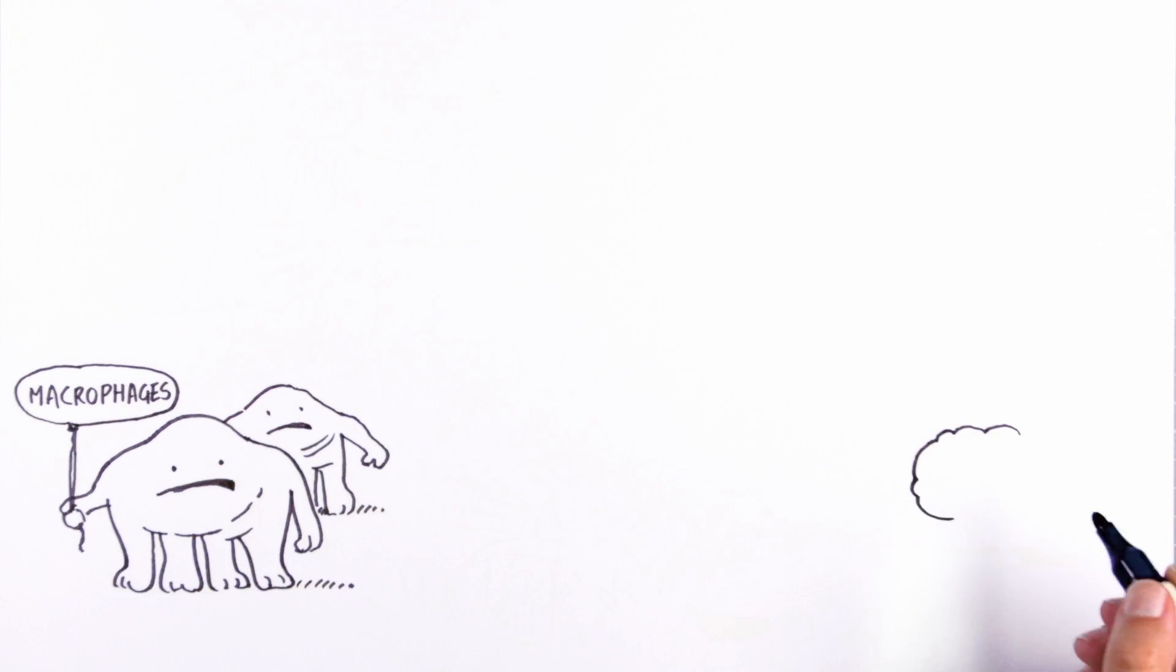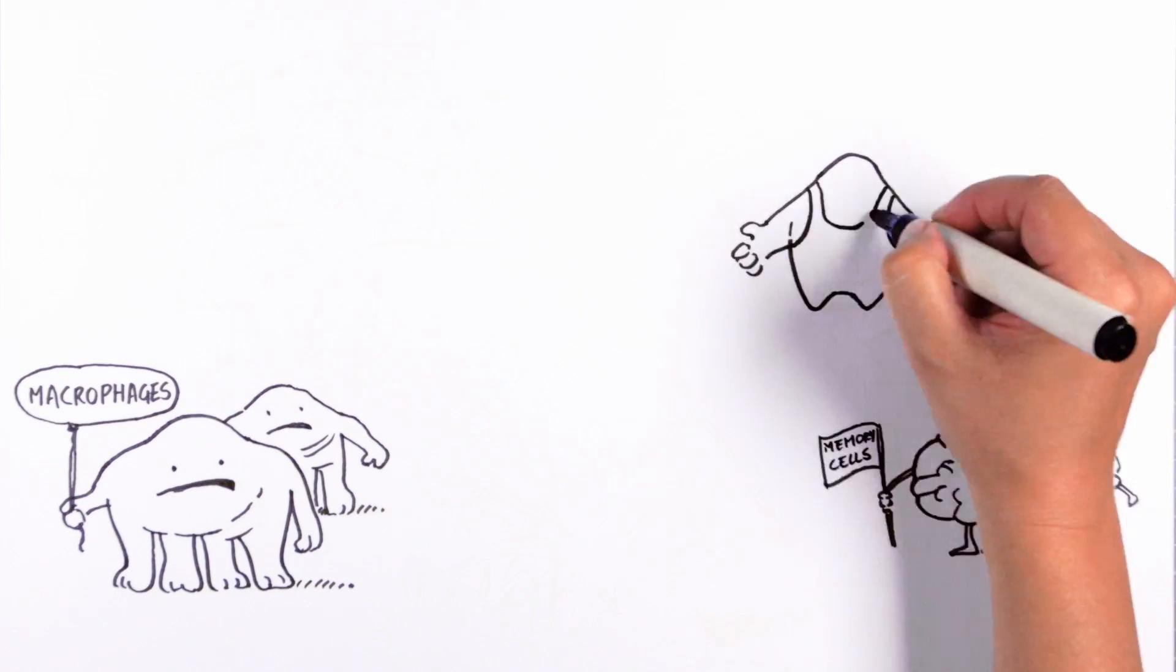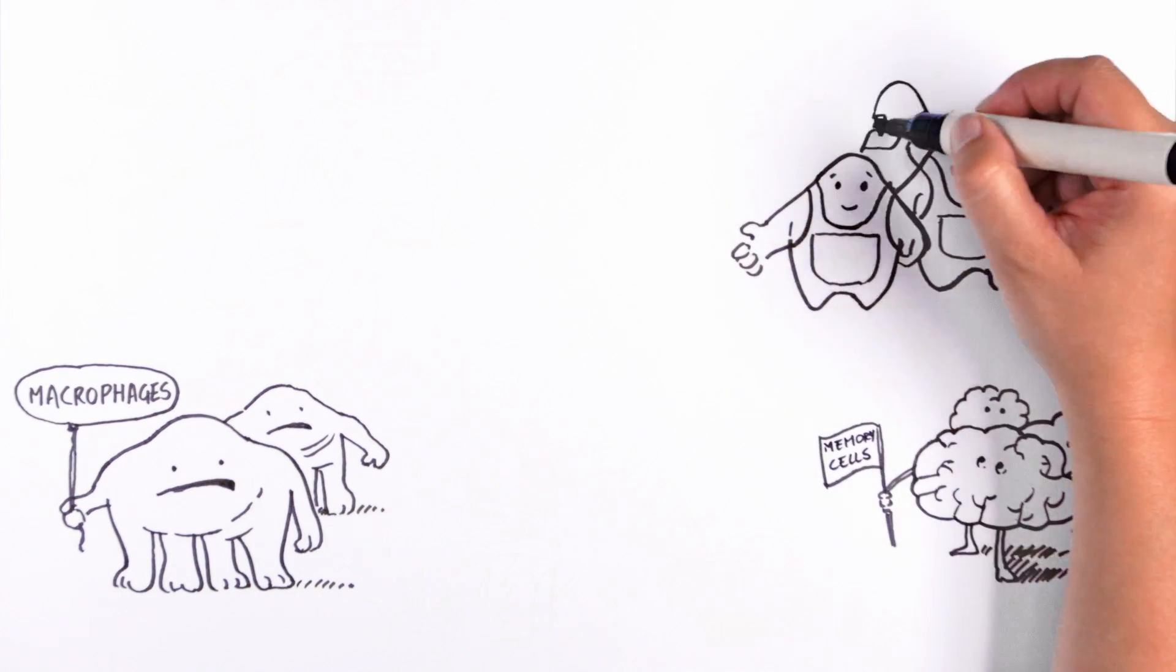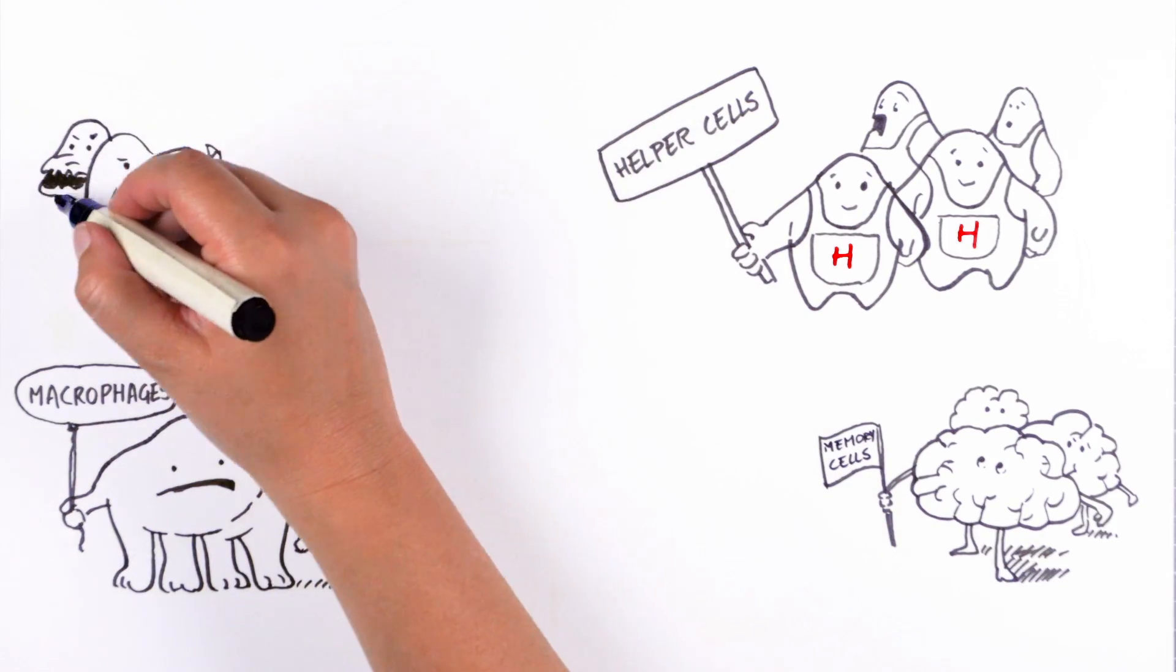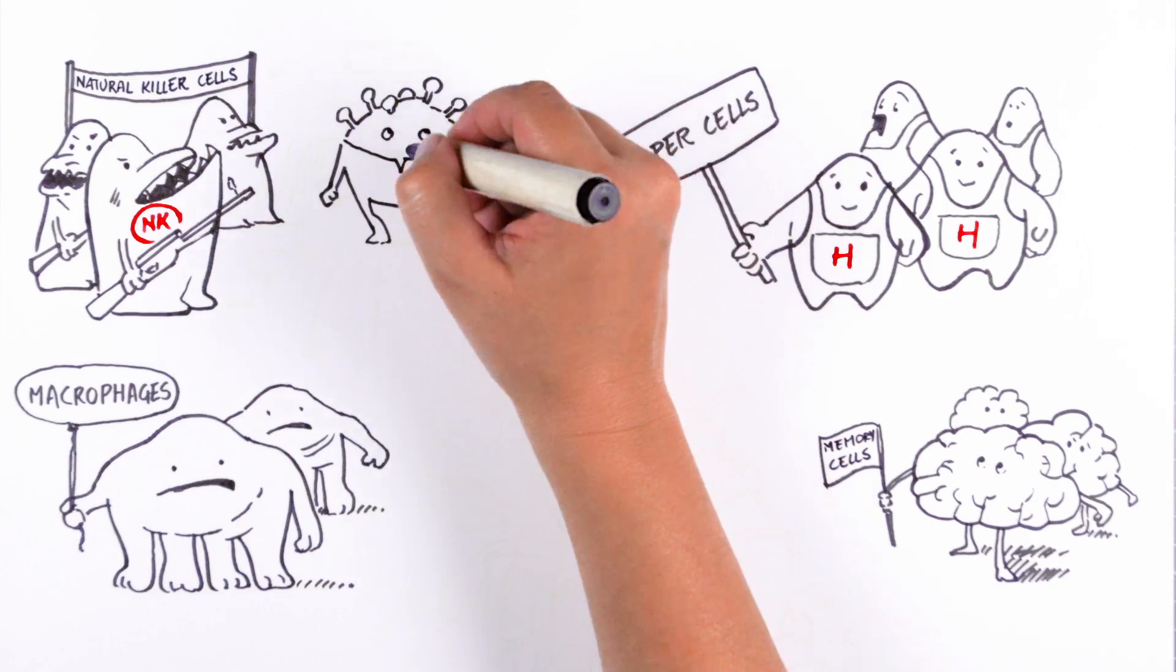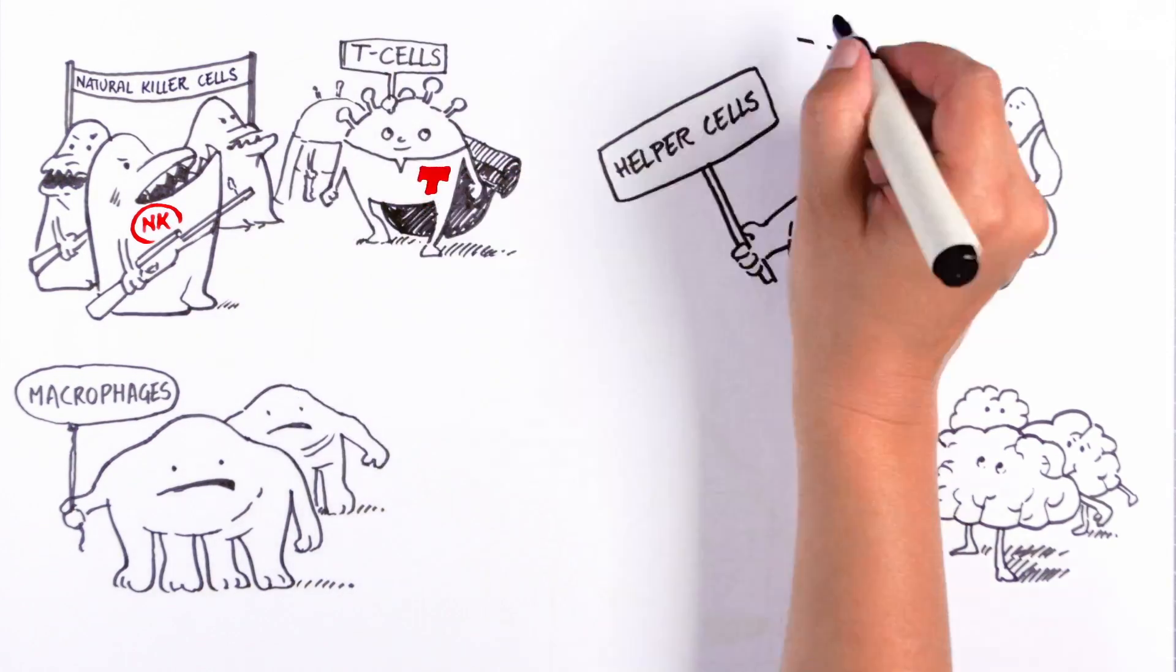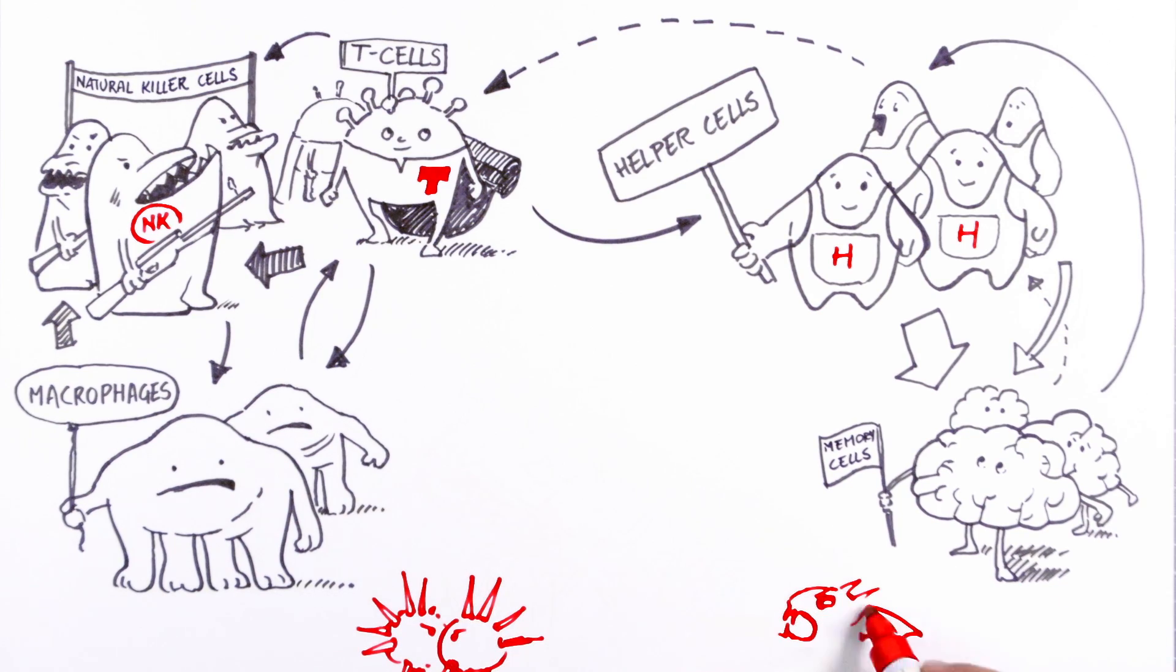The immune system is a very large army of cells organized in different specialized units and regulated by a complex network of messengers. Normally, this defense mechanism protects against foreign organisms, such as viruses and bacteria, as well as cancer cells. Sometimes these mechanisms can fail and diseases, including cancers, develop.